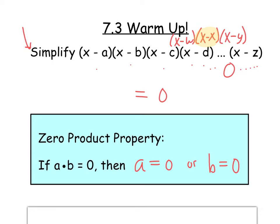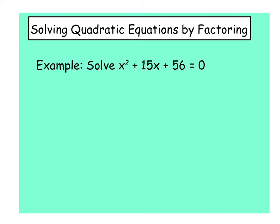The warm-up showed something times something times zero times something equals zero. The zero product property works in reverse: if a times b equals zero, the only way that's possible is if a equals zero or b equals zero. We're going to use that to solve equations. The zero product property says if something times something equals zero, one of those somethings must be zero.